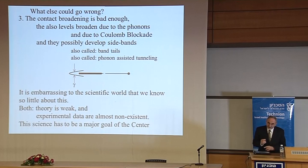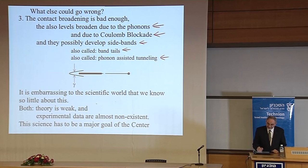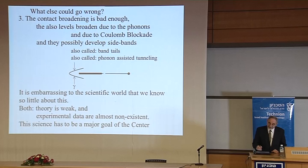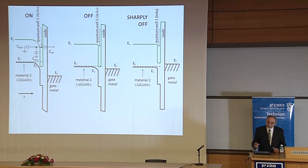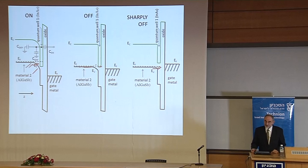What's embarrassing scientifically is how little we know about these processes — theory is weak and there's very little experimental data. We are trying to learn the science of this type of level broadening. Once a two-terminal device is working, you can make it into a three-terminal device — a transistor — by putting a gate on it. The on-state is where conduction occurs and the off-state is where valence electrons have no place to go. In principle, your control voltage could be much lower — that's the whole idea.